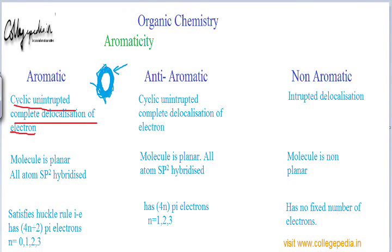For electrons to move from one atom to another in a cyclic fashion, all atoms must have one p orbital into which electrons can enter and exit. This is possible only when the molecule is planar, because if the molecule is not planar, the p orbitals will not be parallel to each other. For any electronic transition — hyperconjugation, resonance, or others — orbitals must be parallel, and that parallelism is satisfied only when the molecule is planar.